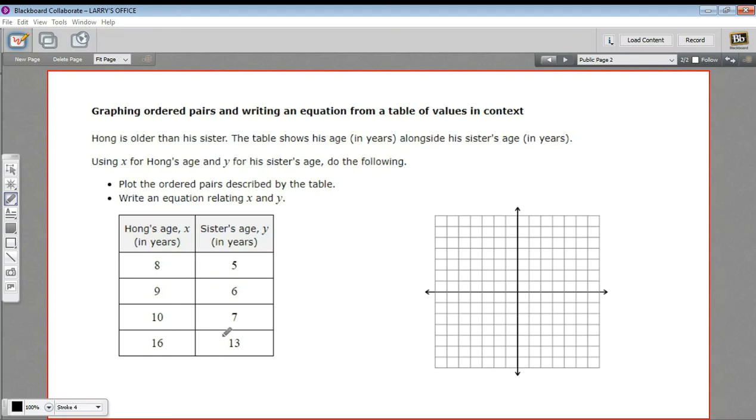In this problem, we have a table of ordered pairs. We have a kid named Hong and his sister, and Hong's age is represented as X and his sister's age represented as Y. So we have these sets of ordered pairs.